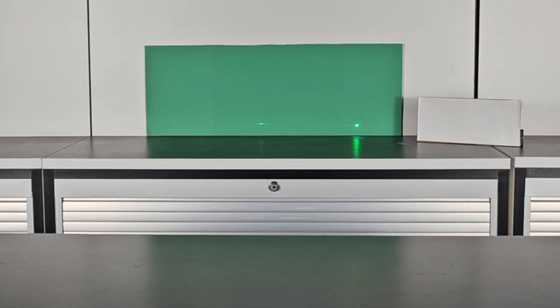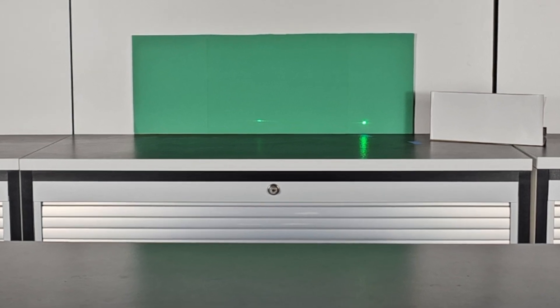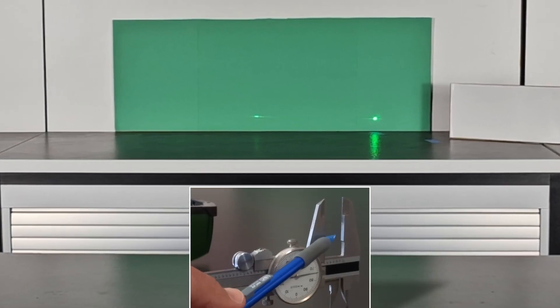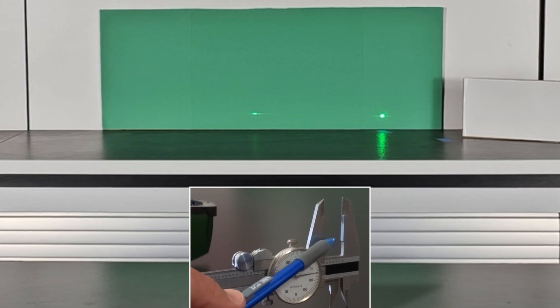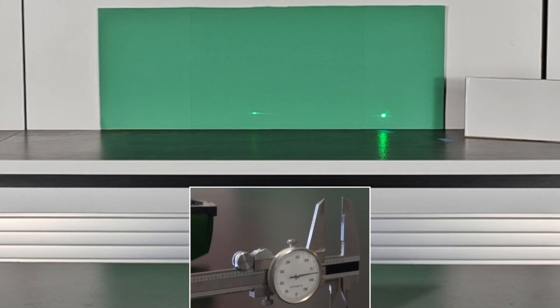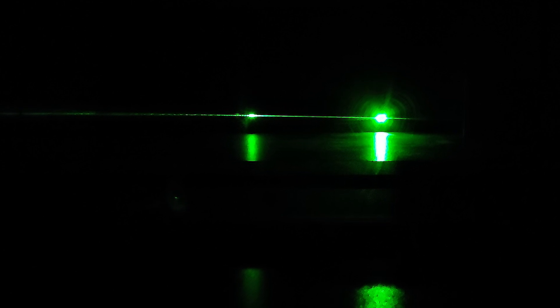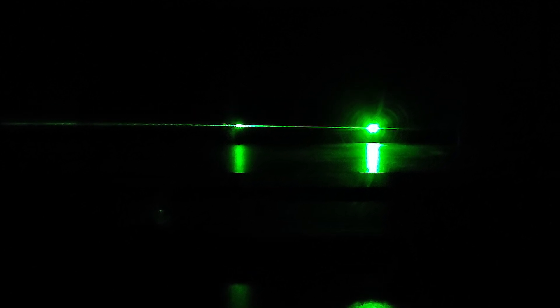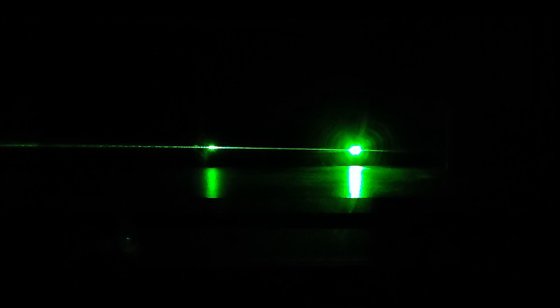Here we see two patterns created when a laser is aimed at one edge of the caliper I use in all my video demonstrations. To better see the patterns, let's go to lights out. The light dark pattern on the left is easy to see. The one on the right is harder to see because the pattern spacing is so very small.